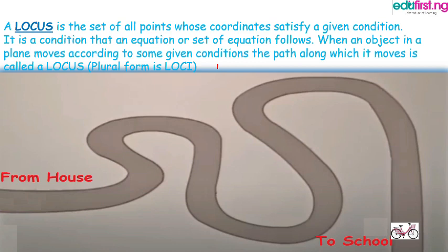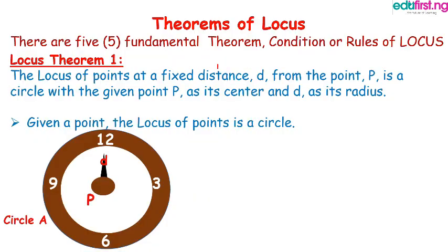So for you to solve locus-related problems, you need to abide by rules. There are conditions you need to follow, and there are five fundamental conditions. Some might call them theories, some might call them rules, but for the purpose of this lesson we are going to call them theories. The first theory of locus says that...